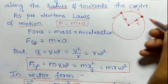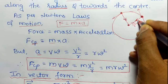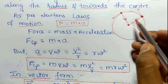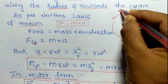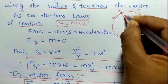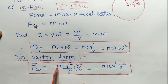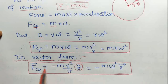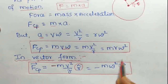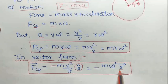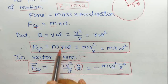The radius vector is in this outward direction, but FCP — centripetal force — acts in the opposite direction, towards the center. Both are along the radius but in opposite directions, which is why there is a negative sign. Similarly, the vector form also gives minus M into R into omega squared times R-cap.